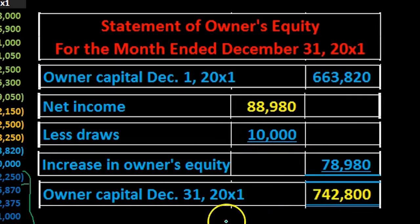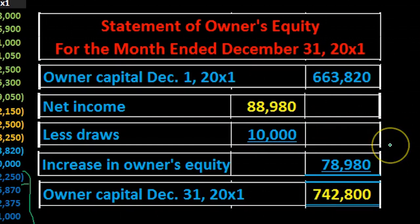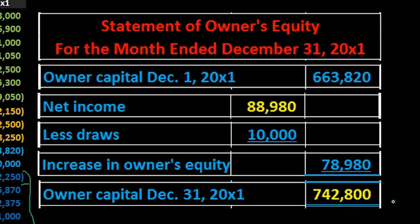Then we finally get to the owner capital as of December 31, 20X1 — the ending owner capital. We're calculating only in the outer column: we've got the $663,820 plus the net increase, bringing us to $742,800 as our ending number. This ending number is what we will find on the balance sheet. This is how the statement of equity fits into the double entry accounting system represented by the accounting equation — assets equal liabilities plus equity, with this figure being part of the equity section.